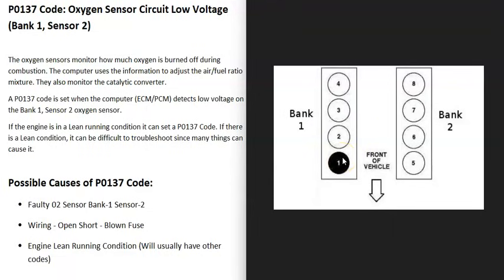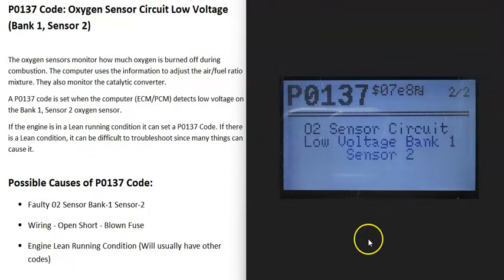If you Google your engine and cylinder location or firing order, you can find the number one cylinder on your engine. That's going to be the bank one side. If you have a four-cylinder engine, it wouldn't matter because you only have one bank.